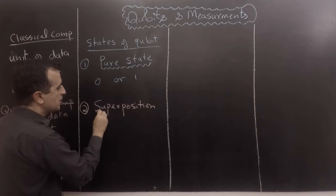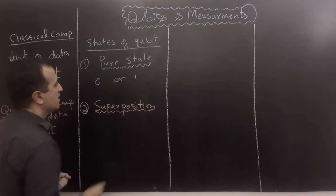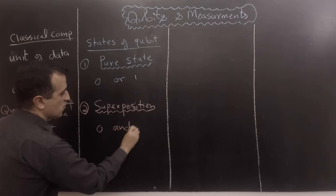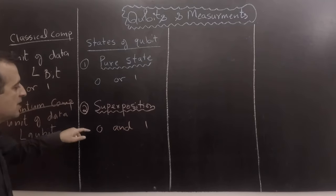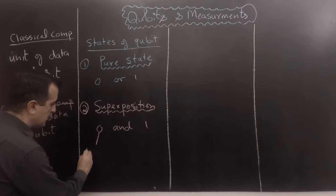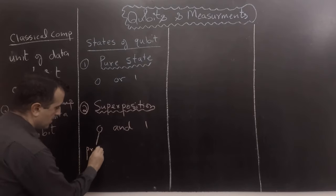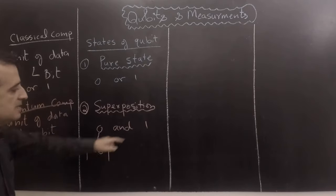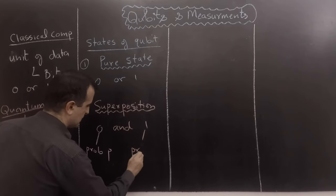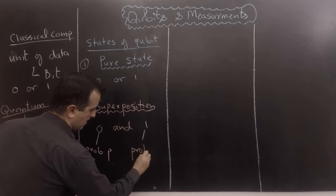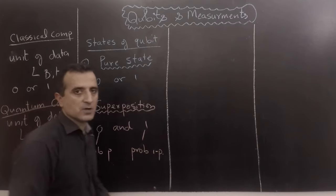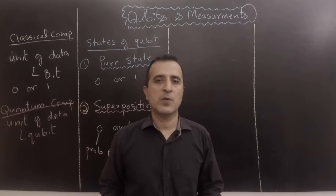In a superposition state, a qubit can have a value of zero and a value of one simultaneously. So we can say that the qubit will have a value of zero with probability p, and a value of one with probability one minus p.